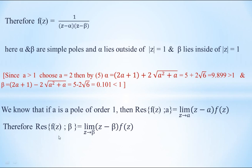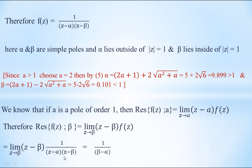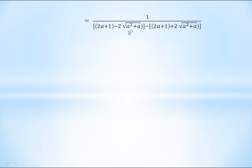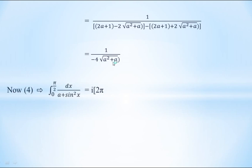Since β is a simple pole of order 1, the residue of f(z) at β equals the limit as z → β of (z − β)·f(z). Substituting f(z) = 1/[(z−α)(z−β)], the (z−β) terms cancel, giving 1/(β − α). Substituting β and α: β − α = (2a+1 − 2√(a²+a)) − (2a+1 + 2√(a²+a)) = −4√(a²+a). So the residue equals 1/(−4√(a²+a)).